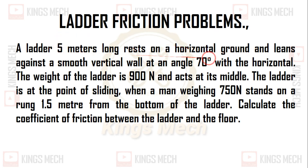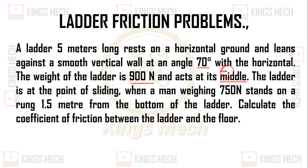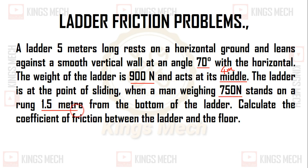So this is the problem: a ladder 5 meters long rests on a horizontal ground and leans against a smooth wall at an angle of 70 degrees with the horizontal. The weight of the ladder is 900 Newton and it acts at the middle. The ladder is at the point of sliding when a man of weight 750 Newton stands on a rung 1.5 meters from the bottom. Calculate the coefficient of friction between the ladder and the floor.